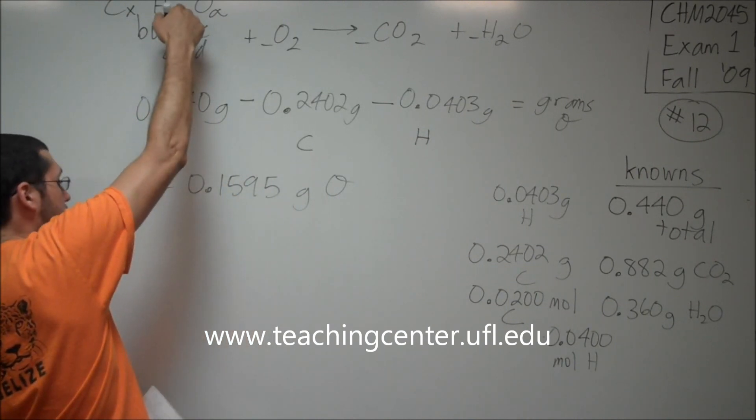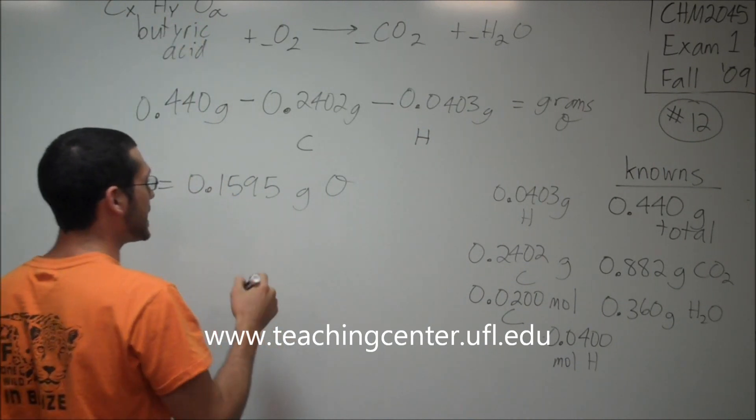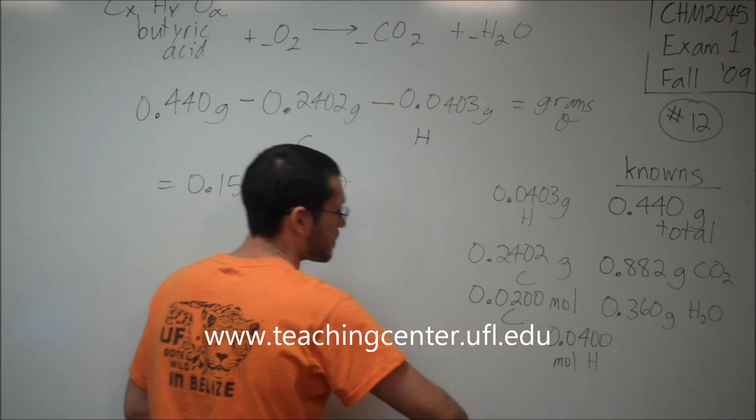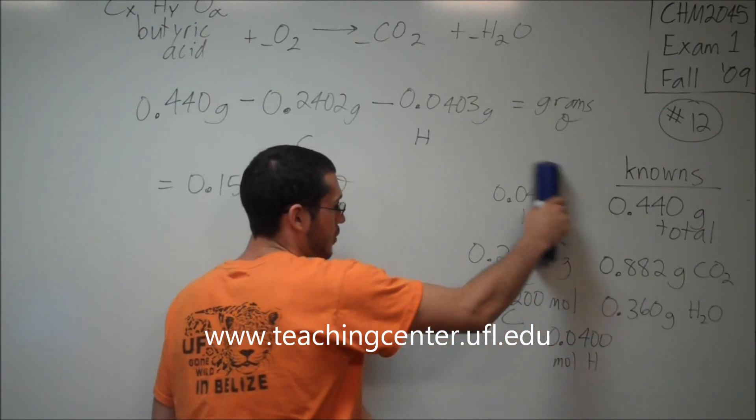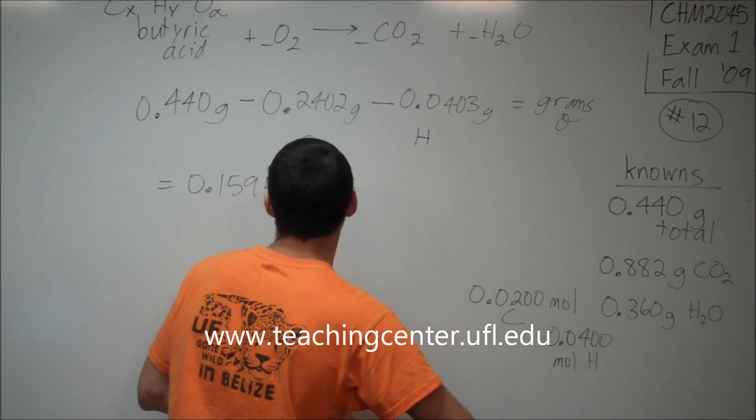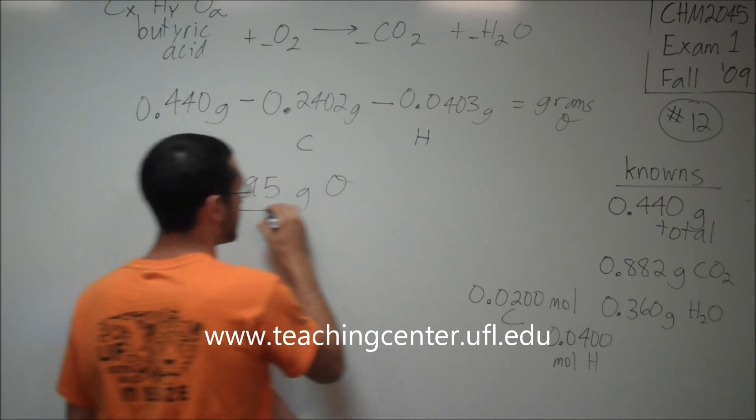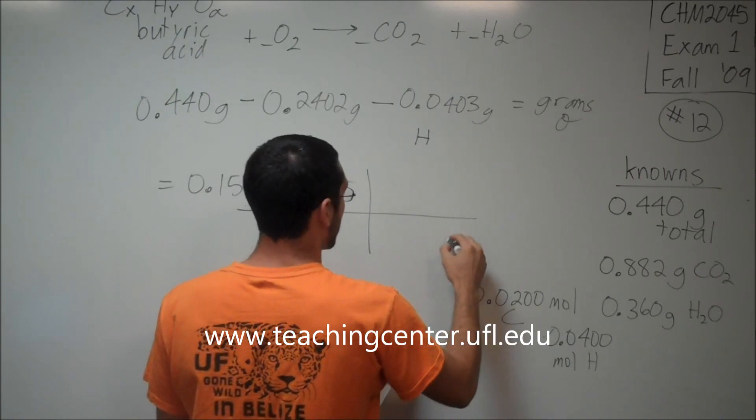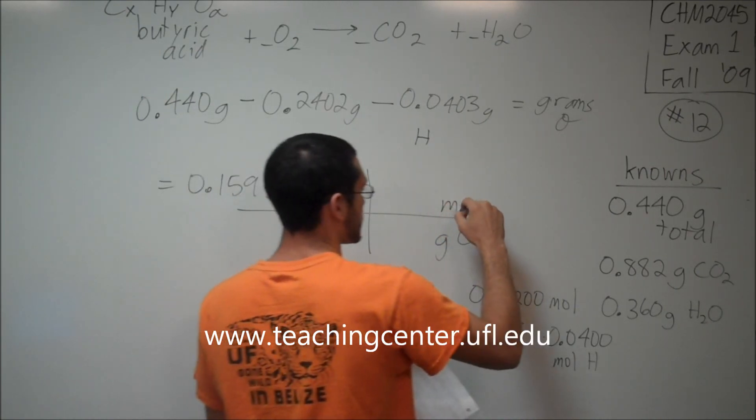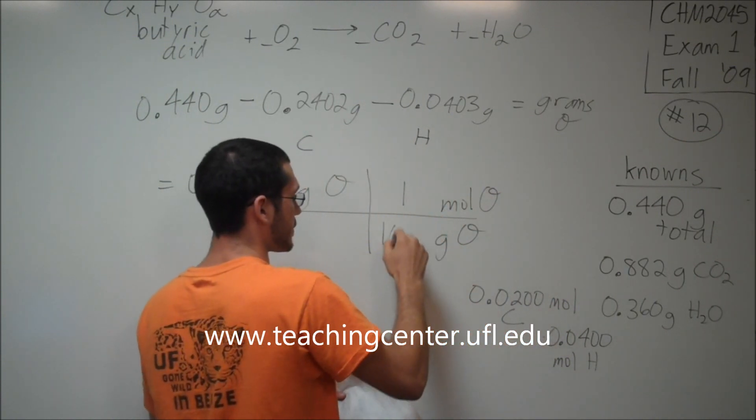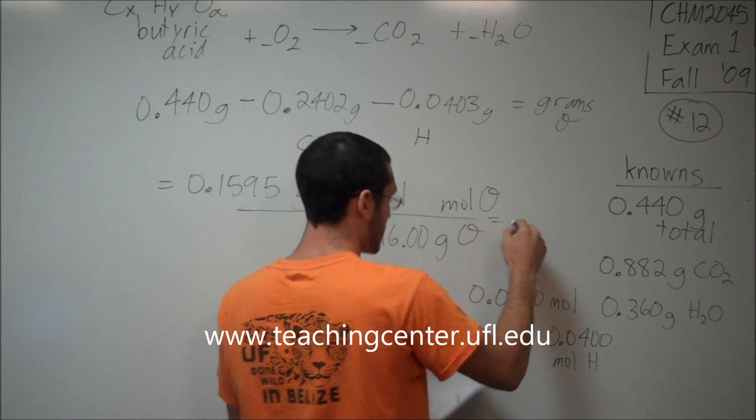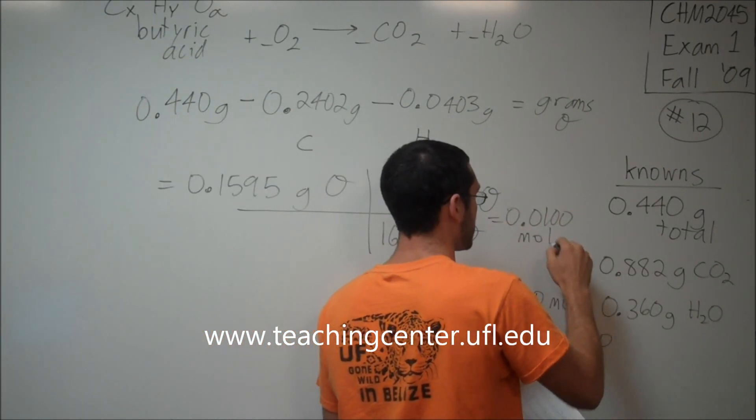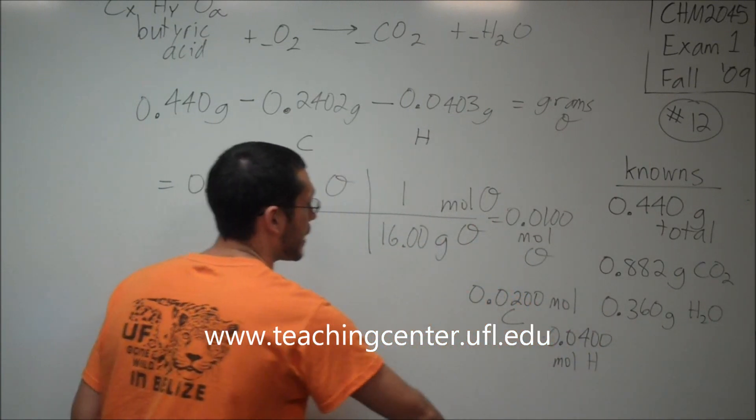In order to determine the empirical formula for the compound I need to figure out the mole to mole to mole ratio. The mole of oxygens to the mole of carbons to the mole of hydrogens. I need to figure out how many moles of oxygen I have. Grams of oxygen to moles of oxygen. For every one mole of oxygen I have 16.00 grams. This comes out to be 0.0100 moles of oxygen. Now I have all my mole quantities.